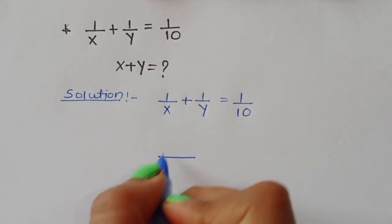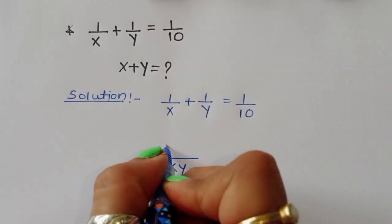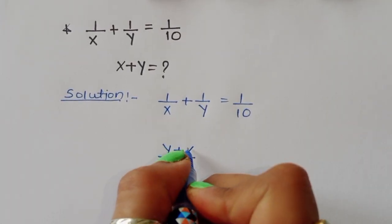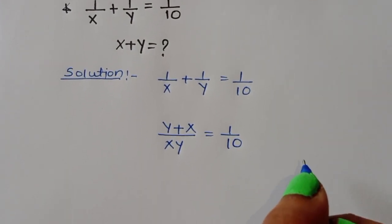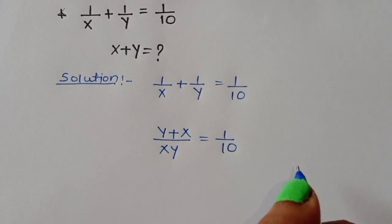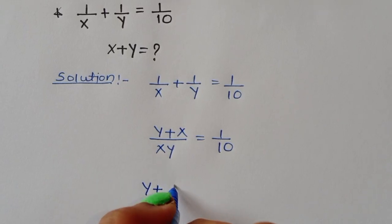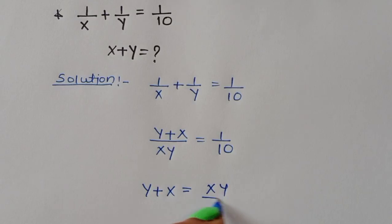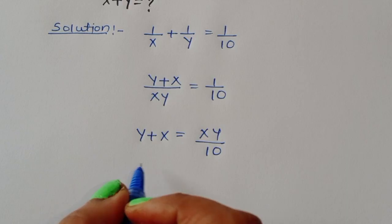We take a common denominator of xy. The x cancels from the first term, giving y, and y cancels from the second term, giving x. So y plus x over xy is equal to 1 upon 10. Now we do cross multiplication, giving us y plus x equal to xy upon 10.